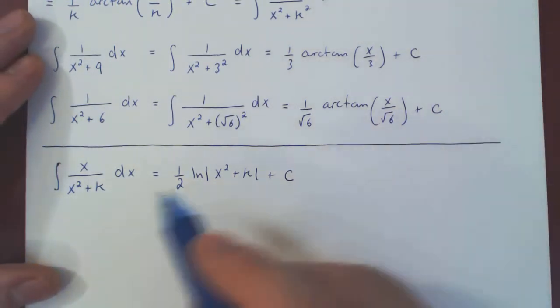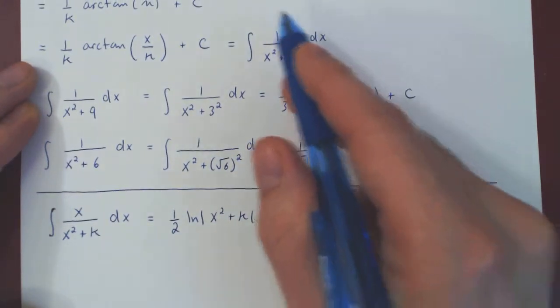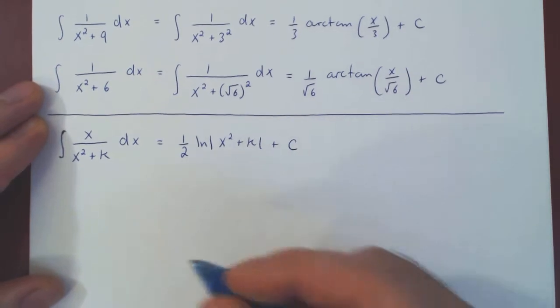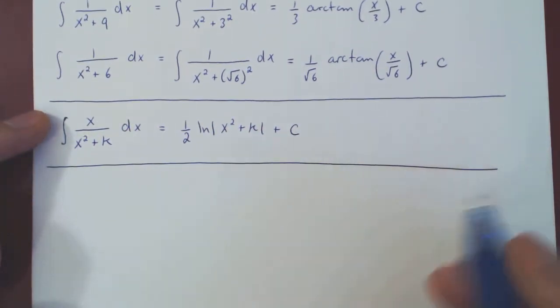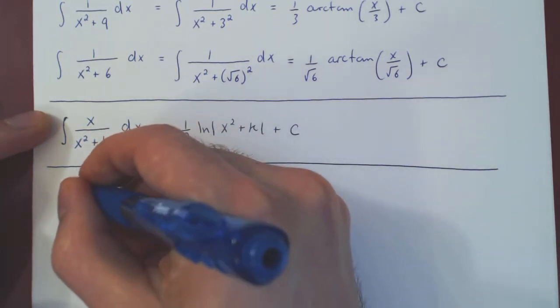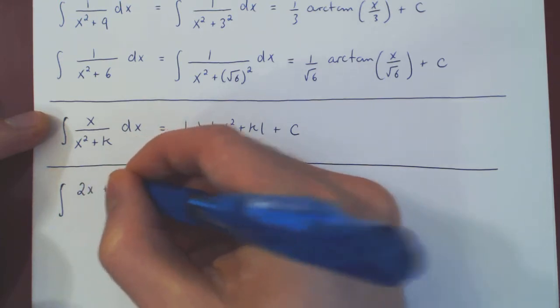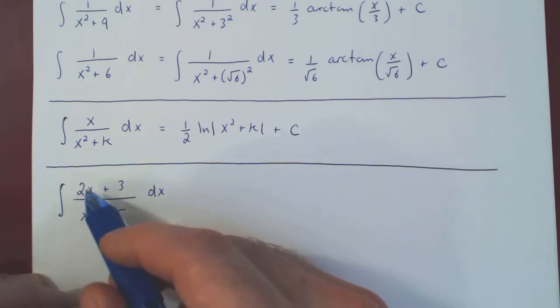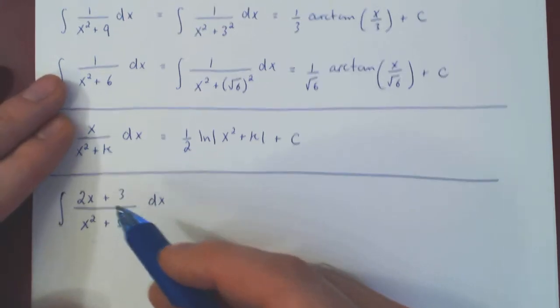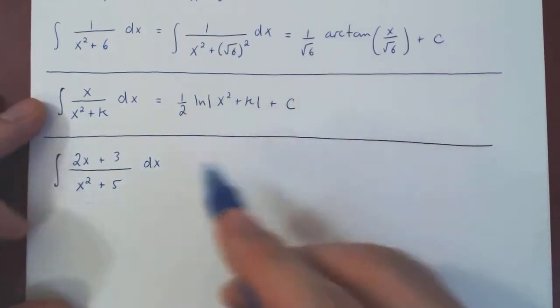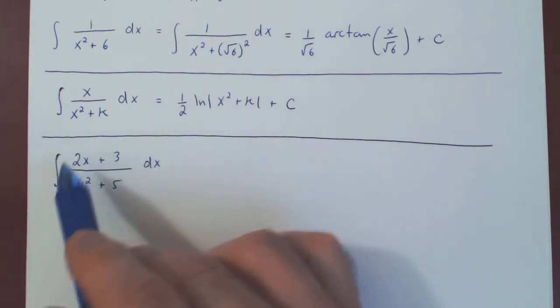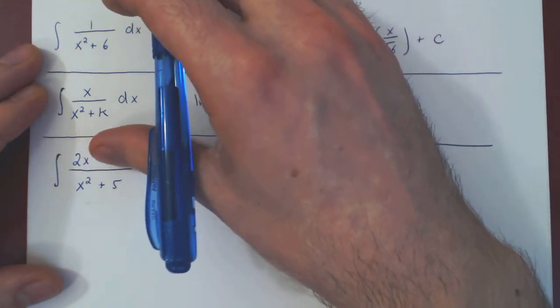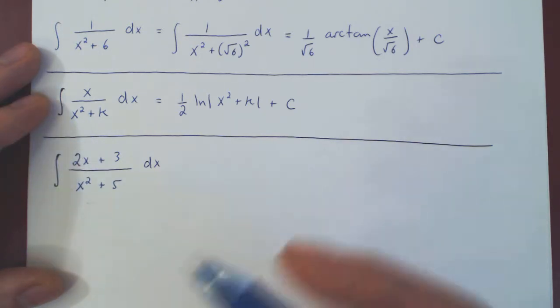So sometimes you'll have an integral that will combine both this special integral and also this other special integral. And the idea is, when they're within the same integral, you have to split them up. So let me show you what I mean by this. This will be the last example of this video. So what if we had to integrate, say, 2x plus 3 over x squared plus 5? You can recognize that the first part is of this type, and the second part is of the type of the second special integral. So as long as you keep the rational function as a single rational function, you will not be able to evaluate this given integral. But if you split up the fraction into a sum of two fractions, namely 2x over x squared plus 5 and 3 over x squared plus 5, then you can tackle both fairly easily.